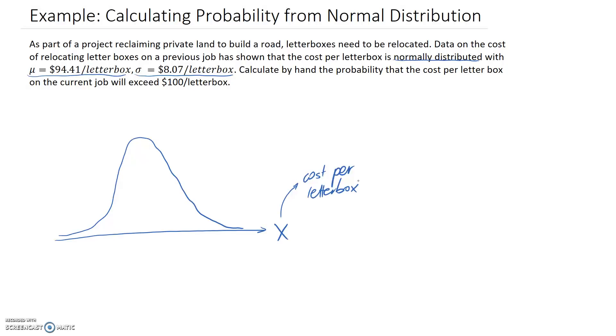We're told that the mean cost per letterbox, which goes in the middle here, is μ = $94.41. The standard deviation, I'll just pop this off to the side to remind us, is σ = $8.07.